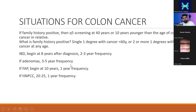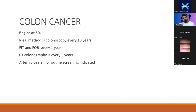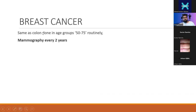Breast cancer screening shares the 50–75 age bracket with colon cancer. It is done in women only for routine screening, with mammography every two years. Exam questions will give the date of the last mammogram — one year ago or 1.5 years ago — and ask whether to repeat. The answer depends on knowing the two-year frequency. It's one of the simplest cancer screenings to remember.